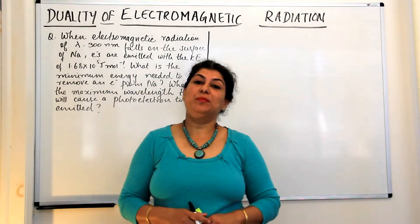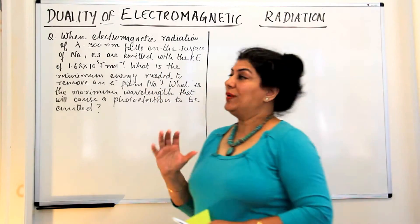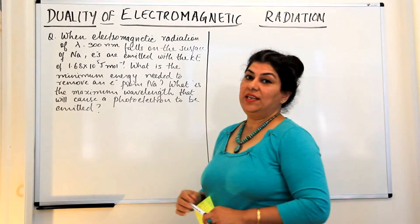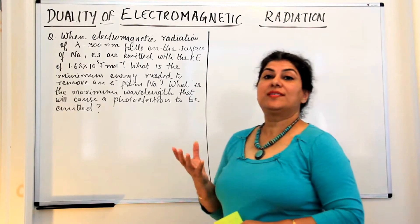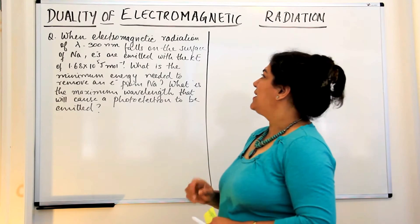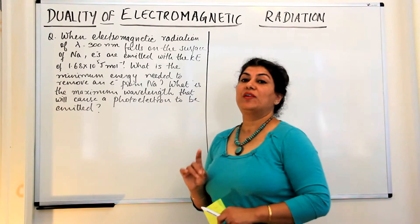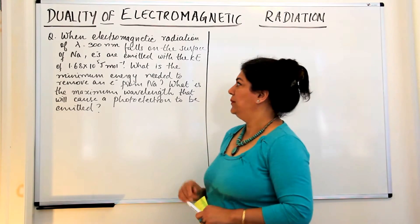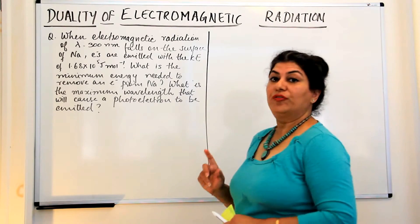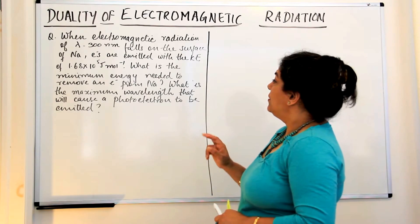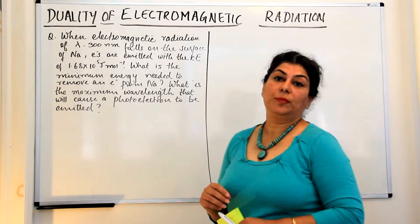Let us solve another numerical problem about the dual nature of electromagnetic radiations. The question is: when electromagnetic radiation of wavelength 300 nanometers falls on the surface of sodium, electrons are emitted with a kinetic energy of 1.68 × 10⁵ joules per mole. What is the minimum energy needed to remove an electron from sodium? And what is the maximum wavelength that will cause a photoelectron to be emitted?